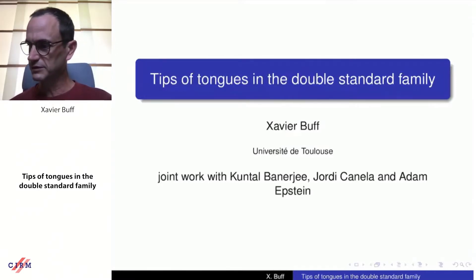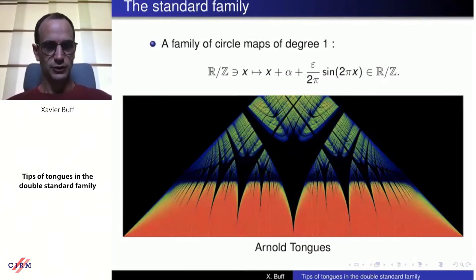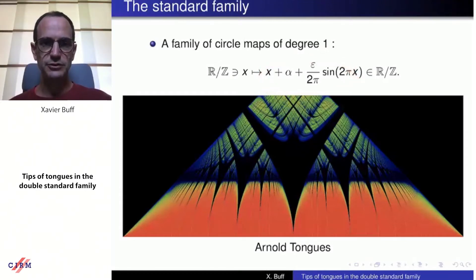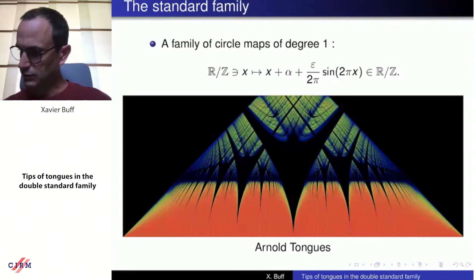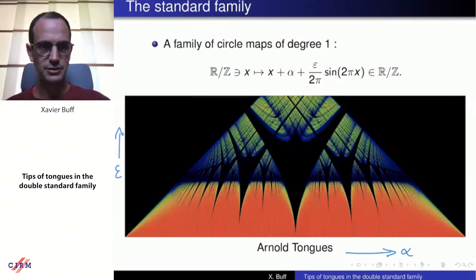The family is called the double standard family because there is already a family called the standard family. The standard family is a family of circle maps on R/Z — it commutes with translation by one, so it goes down to R mod Z, giving a homeomorphism of the circle as long as epsilon is small enough. You have a two-parameter family where alpha is one direction and epsilon goes in the other direction. For epsilon equal to zero you have just a rotation by angle alpha.